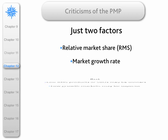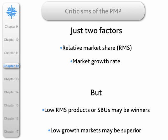When many people came to employ this, they said this isn't enough, it's not sufficient. Furthermore, it may not be correct, because we may well have low RMS products or businesses which are winners, which are habitually successful. It might also be the case that some low growth markets are superior to high growth markets — for example, computers versus soap.